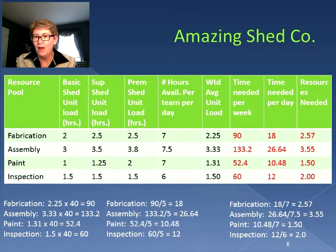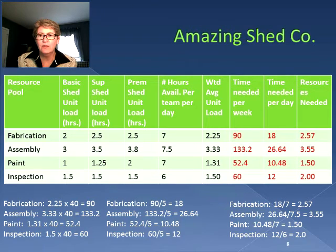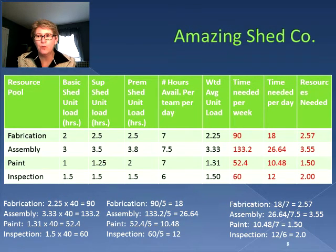We also know how many hours are available per team per day — that was given originally. Dividing time needed per day by hours available per team per day gives us the number of teams we need. So: fabrication 18 divided by 7 = 2.57 teams; assembly 26.64 divided by 7.5 = 3.55 teams; paint 10.48 divided by 7 = 1.5 teams; inspection 12 divided by 6 = 2 teams.